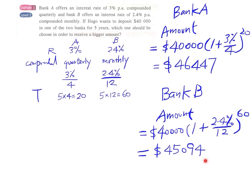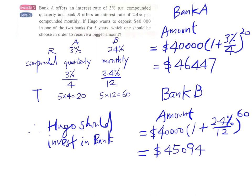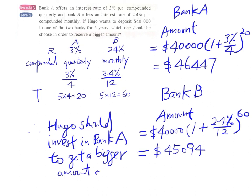We can see that the amount from Bank A ($46,447) is more than the amount from Bank B ($45,094). Therefore, Hugo should invest in Bank A to get the bigger amount of $46,447.